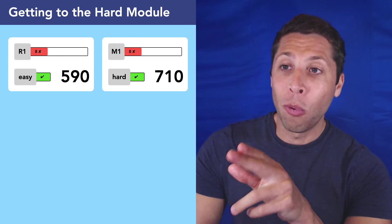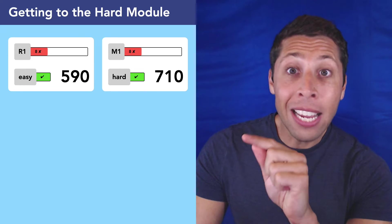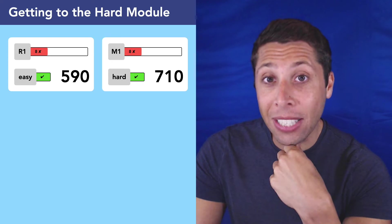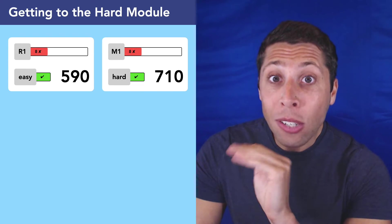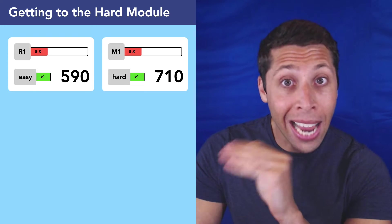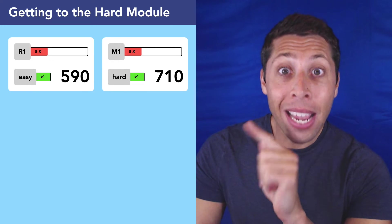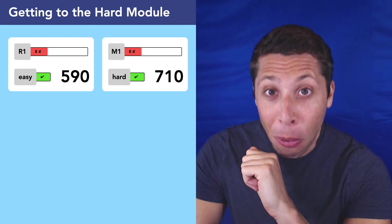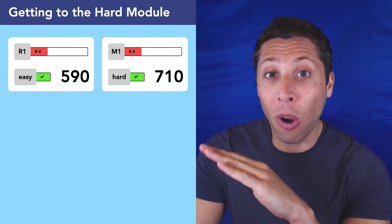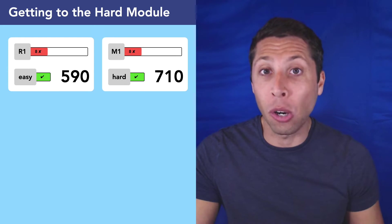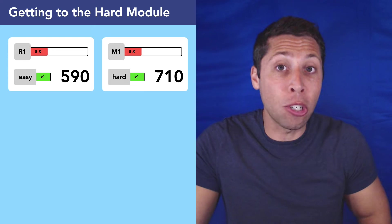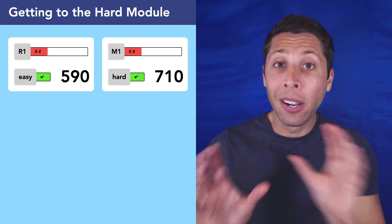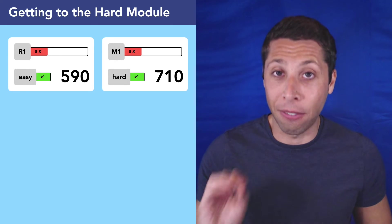So that's already a big difference. We have the easy module, eight questions wrong, getting us a 590. In the hard module in math, I know it's a different subject, but 710, right? So think about that. In math, eight questions wrong was worth 90 points, right? Because the maximum score is an 800. But eight questions wrong in reading was worth 210 points, the same number of questions wrong, which is even crazier because the math has fewer overall questions. So you'd think eight questions would be worth more in math because there's just fewer questions. But it just goes to show the power of the module. The adaptive testing is going to affect the score.